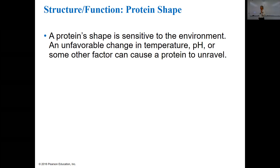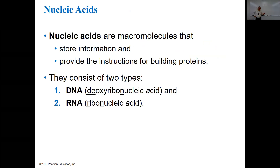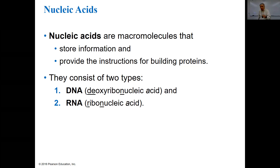A protein's shape is sensitive to the environment. An unfavorable change in temperature, pH, or other factor can cause a protein to unravel — we'll see that in the enzyme lab. If you change the temperature of a protein a little bit, it may not work as well, but you bring it back and it's okay. But if you boil an enzyme or any protein, this is called denaturing — it irreversibly destroys the three-dimensional shape of the protein, and that protein will never work again even if you lower the temperature back down. pH can do the same thing.